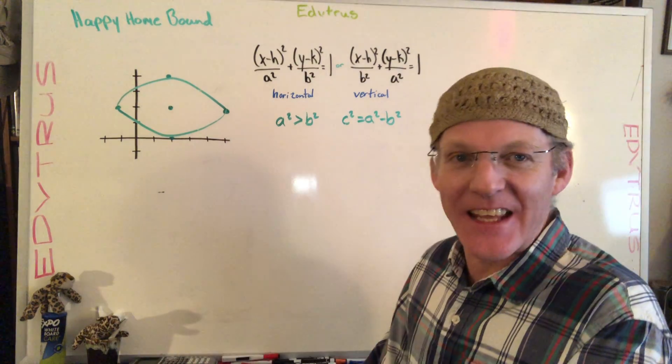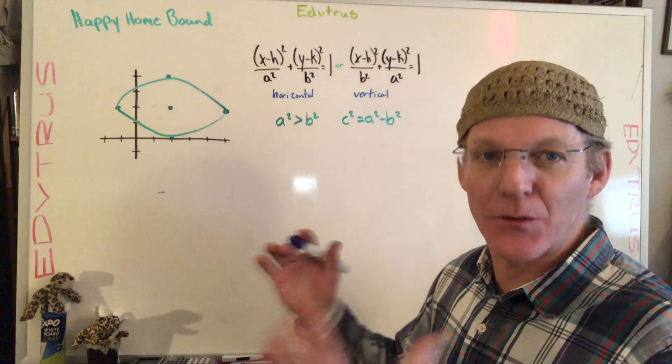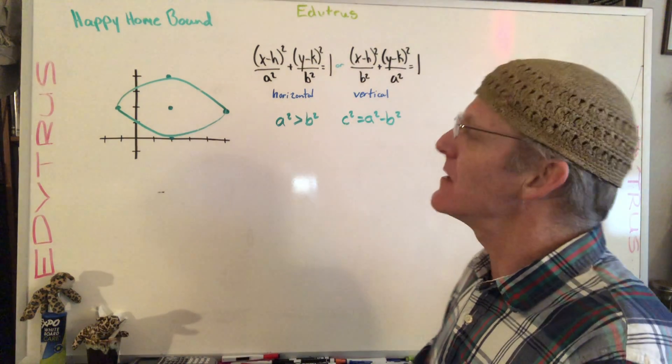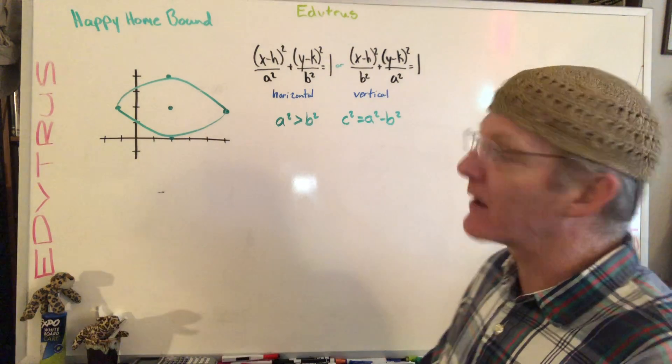Alright, in this case we've been given a graph and we're being asked to write the equation of our ellipse. Depending on the information they've given us determines what we're going to have to do to get there.